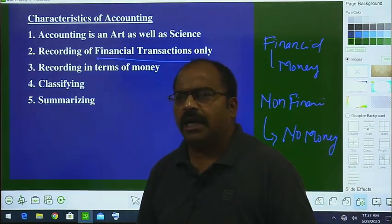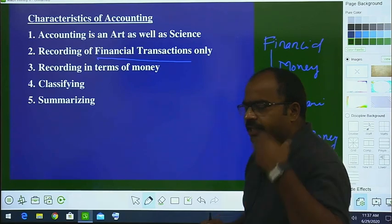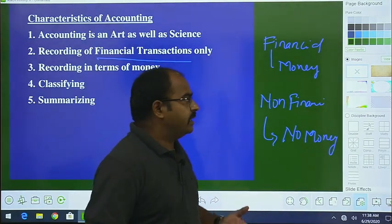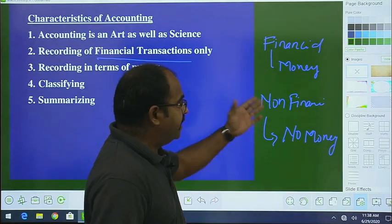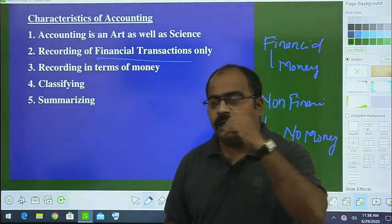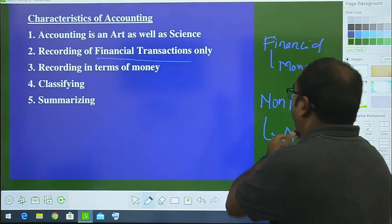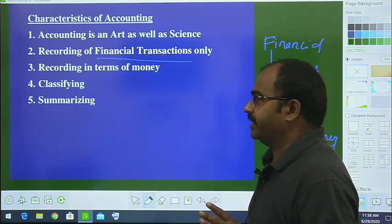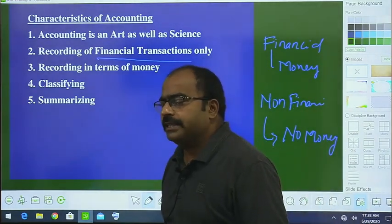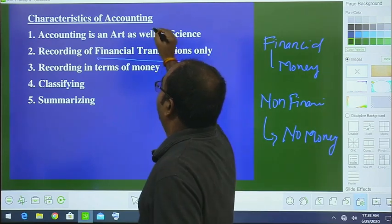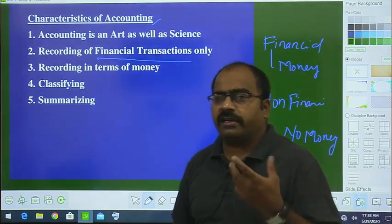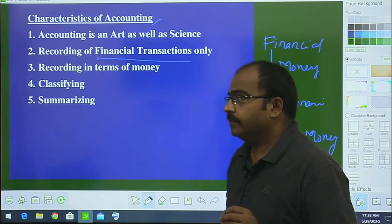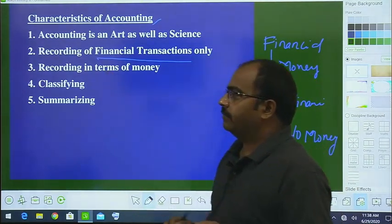For example, if we purchased raw material or paid wages for running our business — purchasing raw material, paying wages — these all come under financial transactions. But if our workers went on strike, that is a non-financial transaction. Accounting says we have to record only the financial transaction.